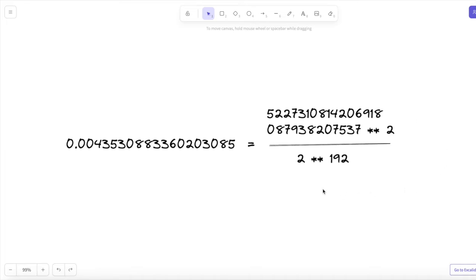And then we divide it by 2 to the power of 192, and that will give us this number, 0.004353, etc. And that is actually the ratio between the Uniswap token and wrapped ether in the Uniswap app.